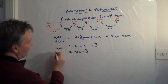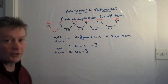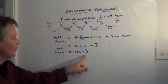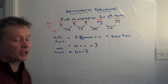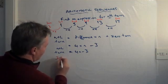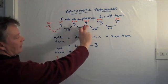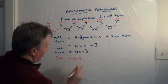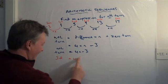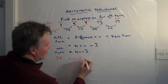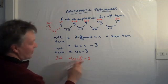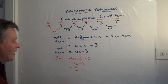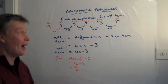So the nth term is 4n minus 3. Let's check that by looking for the expression of the third term. Well, the third term we know is 9. So that will be 4 times 3, which is the value of n. 4 times 3 is 12, and 12 minus 3 is 9. So the third term is 9.